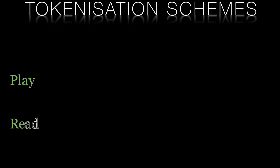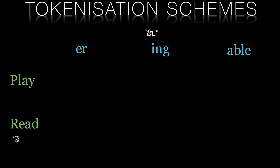Tokenization is essential because it allows computers to understand the structure of natural language text and process it in a meaningful way. Without tokenization, computers would be unable to distinguish between individual words or understand the grammatical relationships between them.